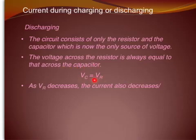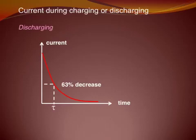And as Vr, voltage across the resistor, decreases, the current must also decrease. This is a graph showing how the current decreases with time during discharging. And it looks very similar to the one for charging.